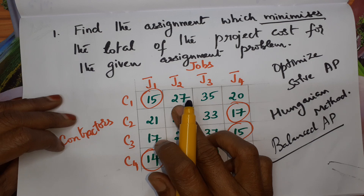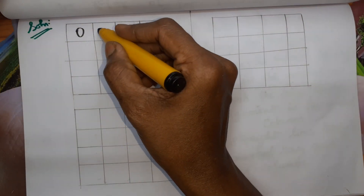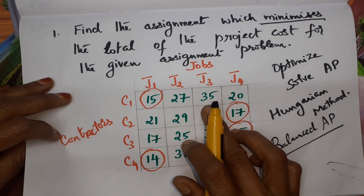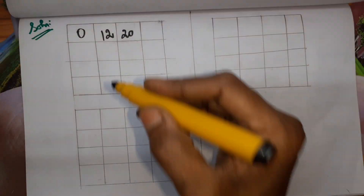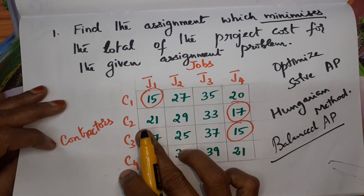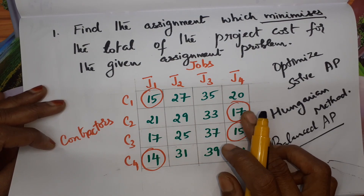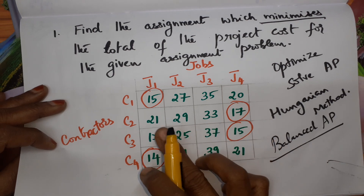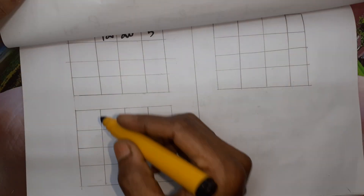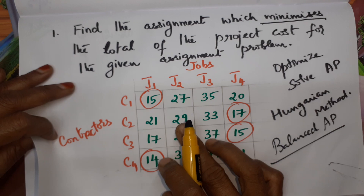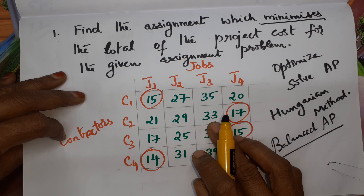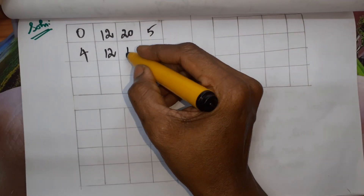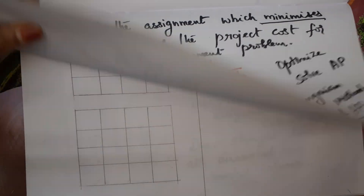15 minus 15 is 0. 27 minus 15 is 12. 35 minus 15 is 20. And 20 minus 15 is 5. In the second row, 17 is the minimum, so this 17 has to be subtracted from all the entries. 21 minus 17 is 4. 29 minus 17 is 12. 33 minus 17 is 16. 17 minus 17 is 0.